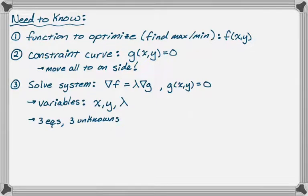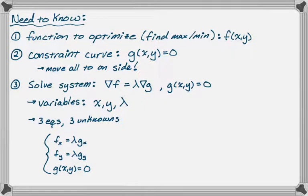We're going to have three equations in three unknowns. We'll have: partial x of f equals lambda times partial x of g; partial y of f equals lambda times partial y of g; and finally, g(x,y) equals zero. That last equation comes in at the end.